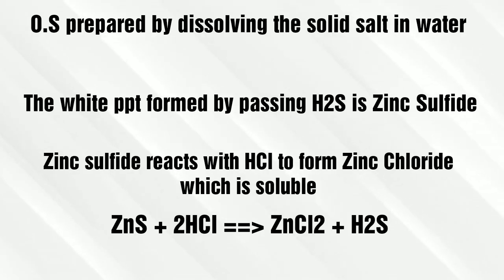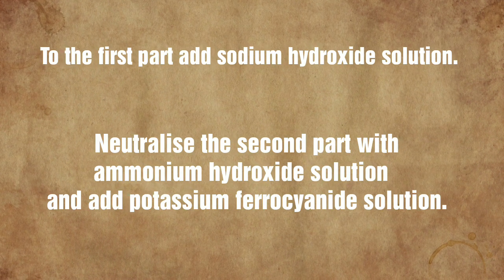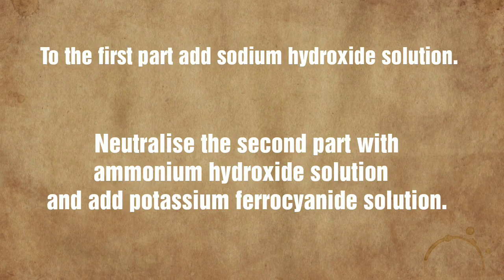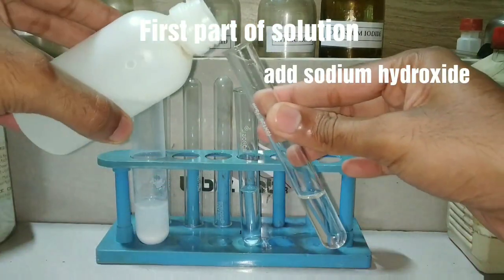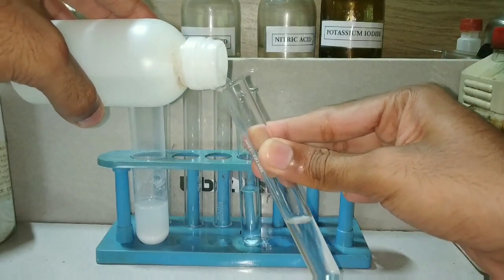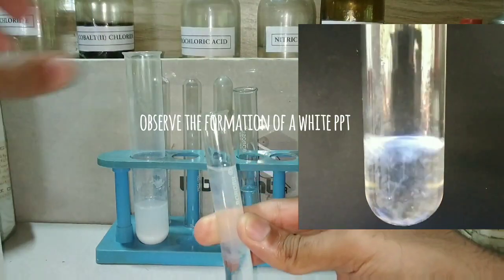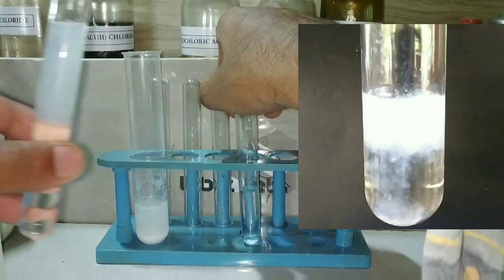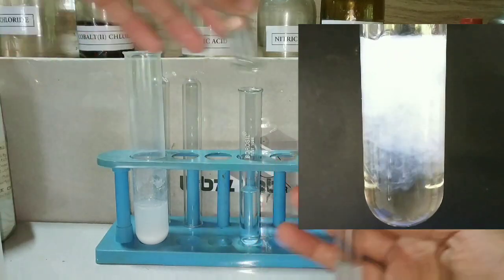The white precipitate formed was zinc sulfide, and zinc sulfide reacted with the hydrochloric acid forming zinc chloride, which is soluble in water. Now that we have dissolved the precipitate, we divide the solution into two parts. To the first part we will be adding sodium hydroxide, and to the second part we add potassium ferrocyanide. Here I have taken the first part and I am adding the sodium hydroxide solution. Initially there is no reaction because the added sodium hydroxide reacts with the already present hydrochloric acid. After that reaction, a white precipitate starts to form.